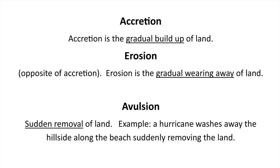The difference between erosion and avulsion is that they're both taking away land, but erosion is gradual while avulsion is a sudden removal. That's the one thing to remember about avulsion: sudden removal of land.